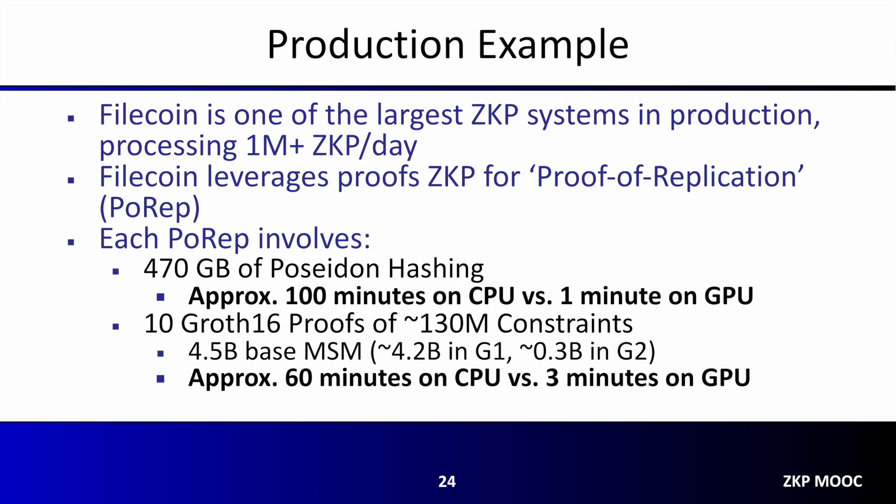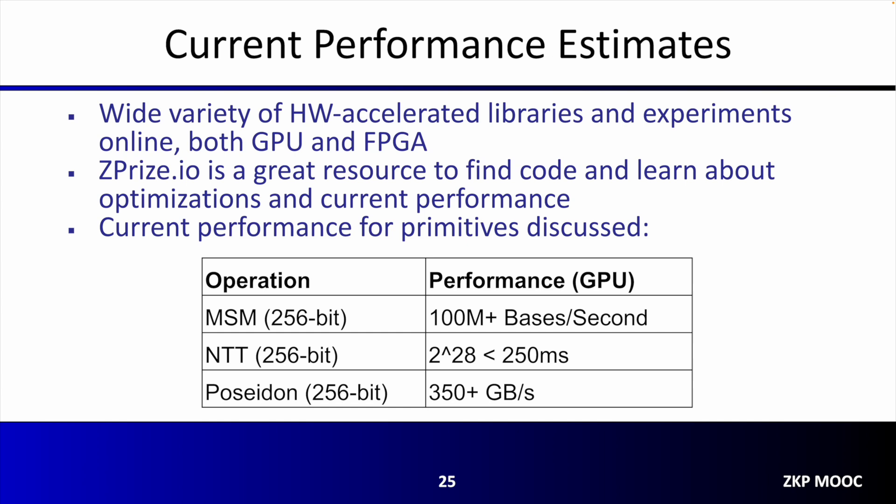If you are interested in learning more about hardware acceleration, there are a number of great resources available online, including open-source GPU and FPGA implementations for many of the cryptographic primitives discussed today. One particularly great resource to visit is zprize.io, a community initiative focused on improving the performance of ZKP systems. The table on this slide provides a brief overview of the performance achievable using a GPU and open-source libraries: for larger multi-scalar multiplications a single GPU can perform at over 100 million bases per second; an NTT of size 2²⁸ can be computed in under 250 milliseconds; and for Poseidon hashing a GPU can hash approximately 350 gigabytes per second.